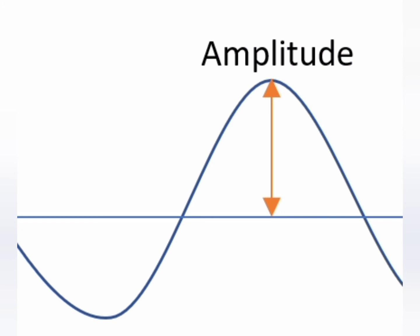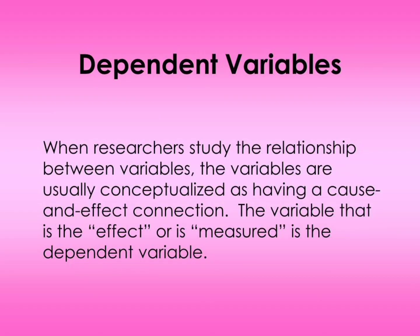Objective tests can also serve as dependent variable measures. For example, to know whether psychotherapy decreases neurotic tendency, a test assessing neuroticism can be administered before psychotherapy to establish baseline levels, and then the same test administered again afterward. Any difference observed can then be attributed to the effect of psychotherapy. Thus, there are various techniques by which we measure dependent variables, and these methods give us the exact values showing the effect of the independent variable.